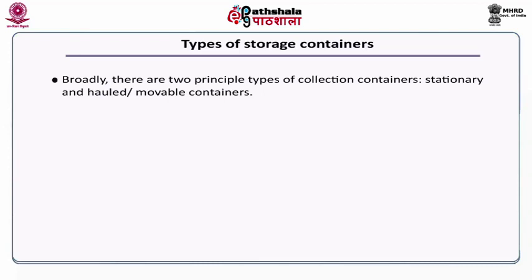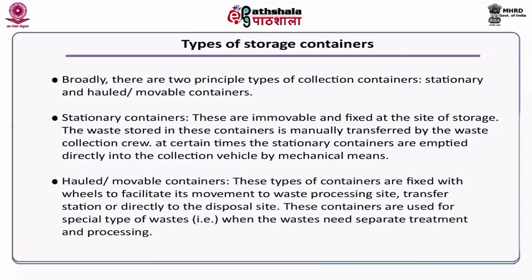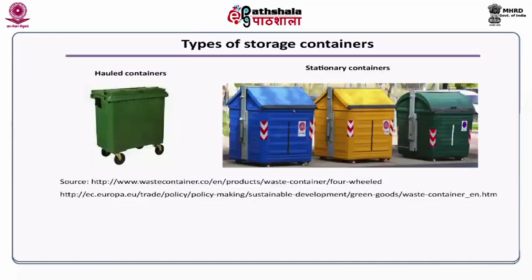Now let us discuss about the types of storage containers. Storage containers are broadly divided into two types: stationary containers and hauled or movable containers. Stationary containers are immovable and fixed at the site of storage; the waste stored in them needs to be transferred manually by the waste collection crew, or at times emptied directly into the collection vehicle by mechanical means. Hauled or movable containers are fixed with wheels so it is easy to move them to a different position, take them to a waste processing site, a transfer station, or directly to a disposal site. These containers are used for collection of special types of waste that need special treatment and processing. This image shows the stationary and a movable container.